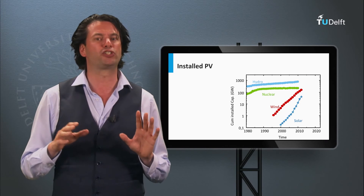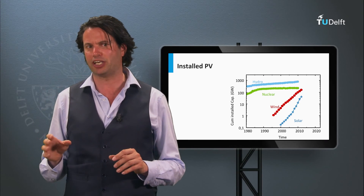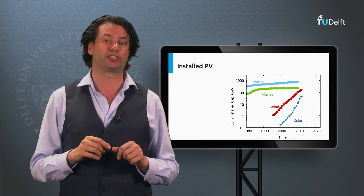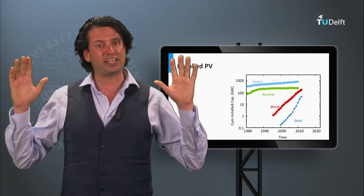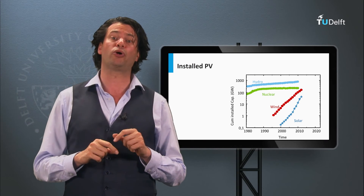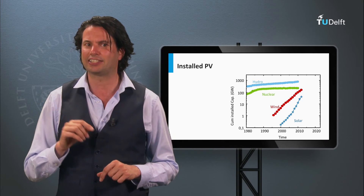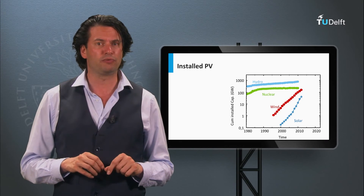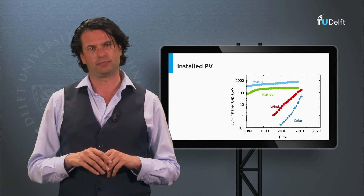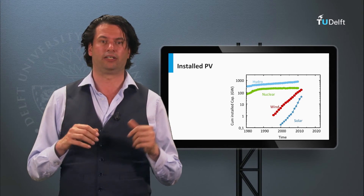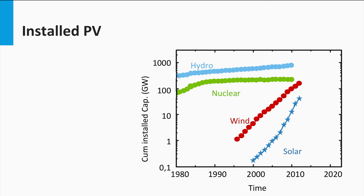In block 1.2 we discussed that hydropower is responsible for 90% of total worldwide electricity production and nuclear for 16%. The question is how these numbers compare to solar. The following figure shows cumulative installed capacity in GW on a logarithmic vertical axis, considering only energy sources not based on fossil fuels. Light blue represents hydroelectricity, dark green represents nuclear, red represents wind, and dark blue represents solar.